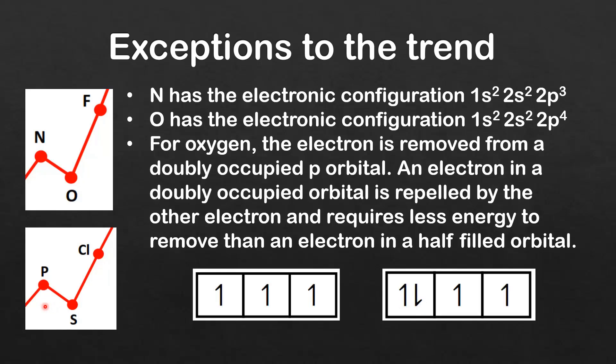The same explanation can be applied for the decrease in ionization energy between phosphorus and sulfur, except that the electrons are occupying the 3p orbitals.